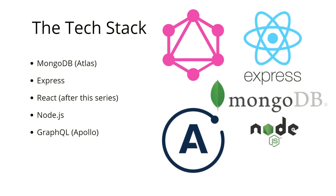These are the technologies we're going to use for this series — basically MERN plus GraphQL. We'll use Apollo Server, which uses an Express server in the background. We could also use Express GraphQL or GraphQL Yoga — they all do the job well — but I personally prefer the tools that come shipped with Apollo Server.